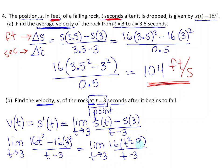This is a difference of squares, which lets me write the limit as t approaches 3 of 16 times t minus 3 times t plus 3, over t minus 3.